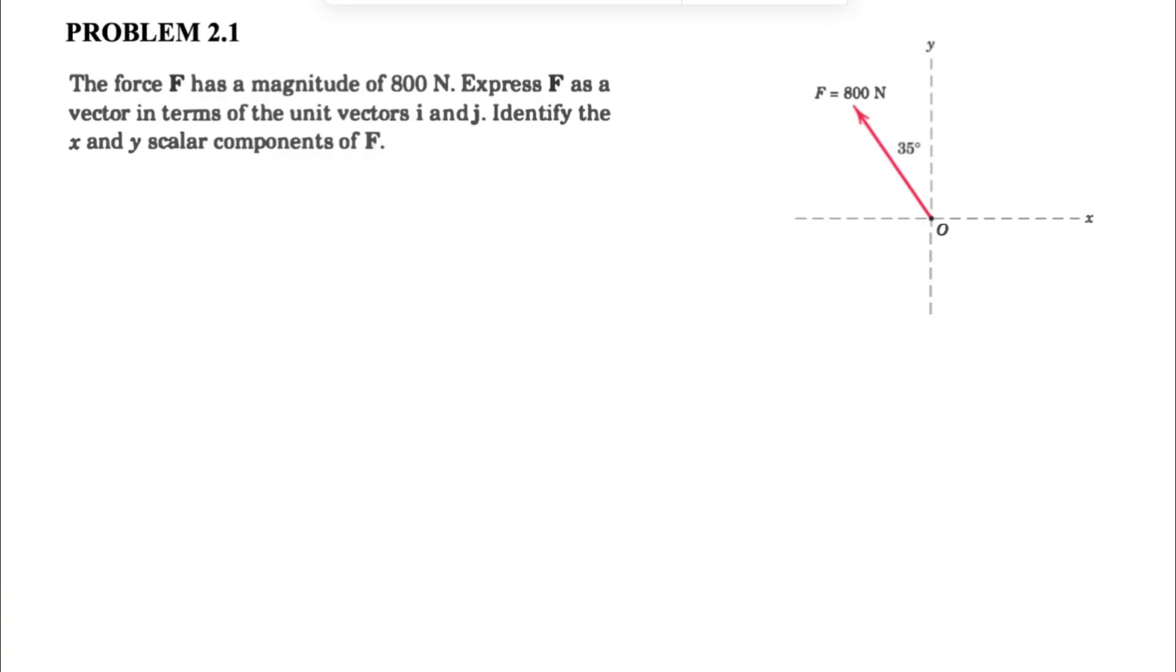If we look at this, F would be the resultant of these two forces. If we consider this rectangle here and use the parallelogram law, the resultant of these two forces—we can call one of them Fx and the other one Fy—is going to be the force F, or the 800 newtons that we have.